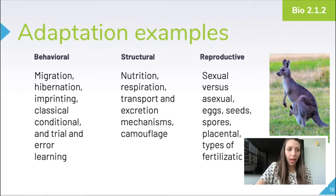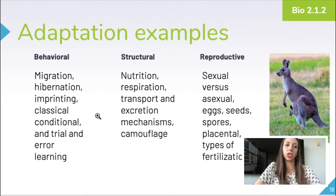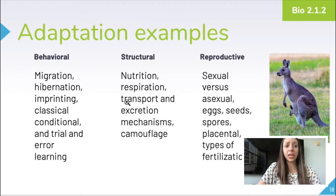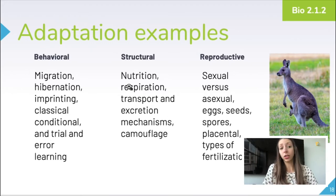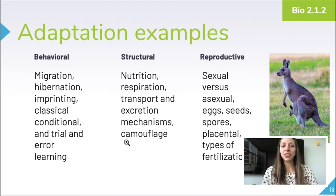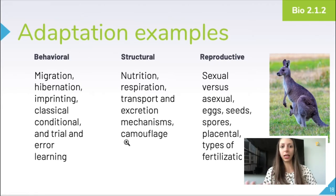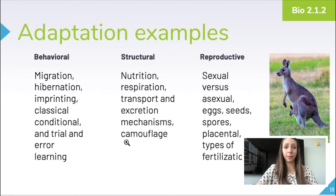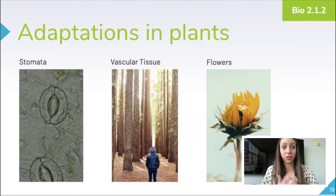Some behavioral adaptations you might need to be aware of include migration, hibernation, imprinting, and learning. Structural adaptations could include nutrition, respiration, transport, excretion mechanisms, or even camouflage. Reproductive adaptations could include sexual versus asexual reproduction, using eggs, seeds, or spores, having a placenta, or different types of fertilization. Let's take a look at some of these adaptations with respect to plants.